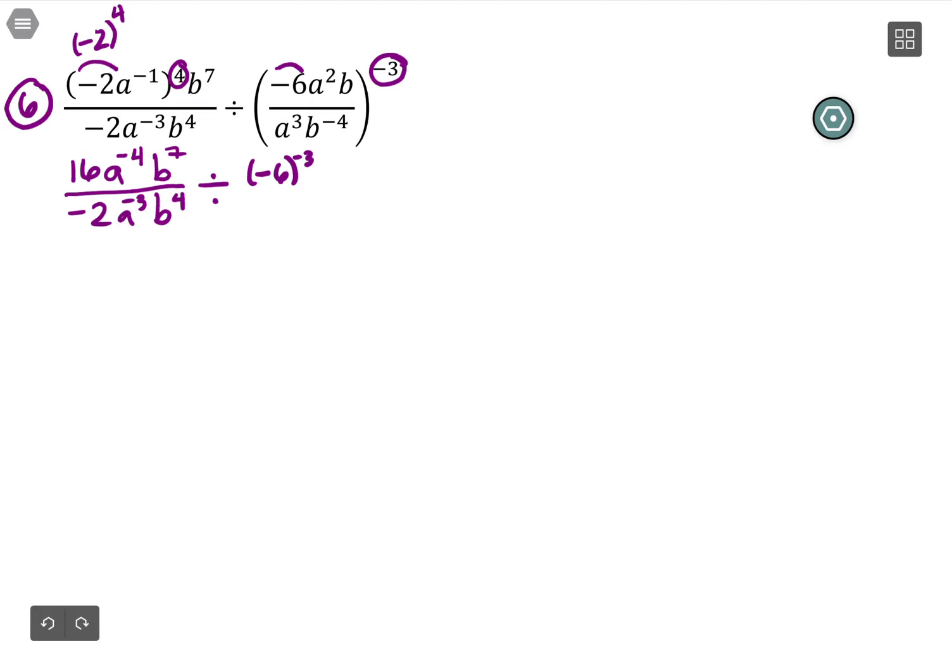a squared to the -3: remember you multiply, so it's a to the -6, and then b to the -3. a cubed to the -3 would be a to the -9, and b to the -4 to the -3 would be b to the positive 12.